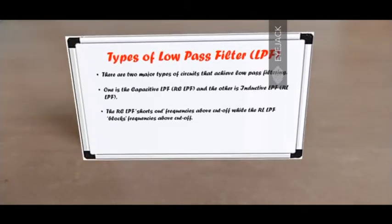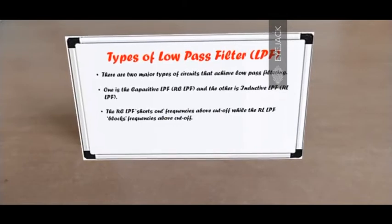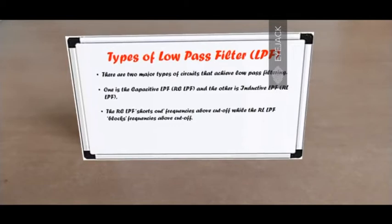There are two major types of circuits that achieve low-pass filtering. One is the capacitive low-pass filter, also referred to as an RC low-pass filter because it uses a resistor and a capacitor, and the other is an inductive low-pass filter or an RL low-pass filter. The RC low-pass filter shorts out frequencies above the cutoff, whereas the RL blocks frequencies above the cutoff.